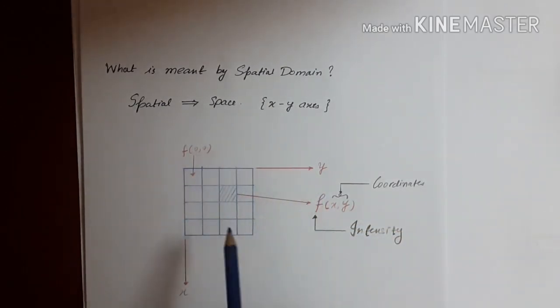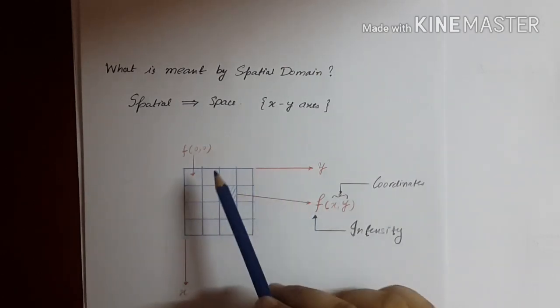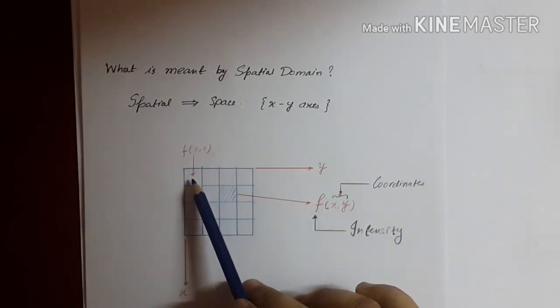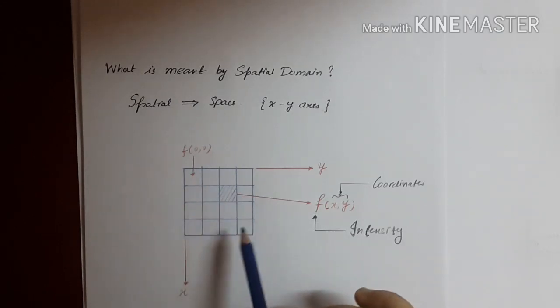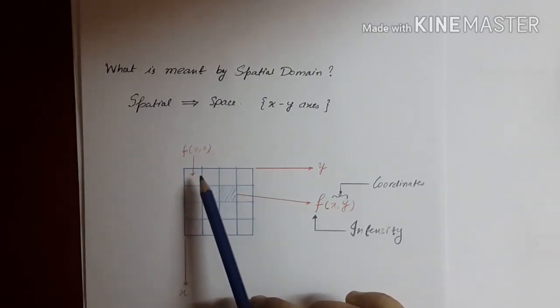This orientation of axis is due to the procedure called raster scanning, which is used to scan any image. This matrix that I have drawn here is my image; it's the entire image, and each cell of the matrix is a pixel.